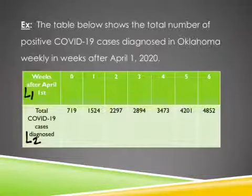And then over in L2, you're going to type the COVID-19 cases number, which are the larger ones. So 719, 1524, 2297, 2894, 3473, 4201, and 4852. Now, if you didn't miss any, hopefully you didn't miss any, you should end up with the same number of entries in each list. They should match. If you've missed something, they're not going to match and you'll know to go back and figure out which ones you actually skipped or something like that.